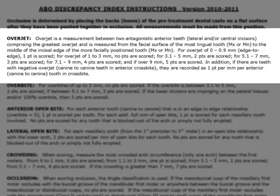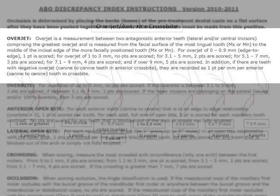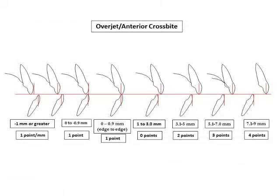For 3.1 to 5 millimeters, two points are scored. For 5.1 to 7 millimeters, three points are scored. For 7.1 to 9 millimeters, four points are scored. And if over 9 millimeters, five points are scored. If there is a negative overjet, anterior crossbite, the score is recorded as one point per millimeter per anterior tooth in crossbite. Here is the visual example of the range of overjets within the overjet category.